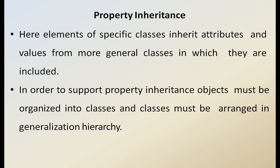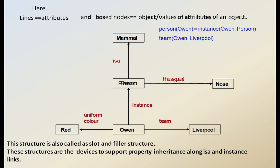It has to maintain the hierarchical structure to represent the collection of objects and the collection of classes in the form of objects. With this diagram, we can clearly understand the meaning of property inheritance. The lines shown here are attributes, and the boxed nodes are object values — that is, values or attributes of an object.